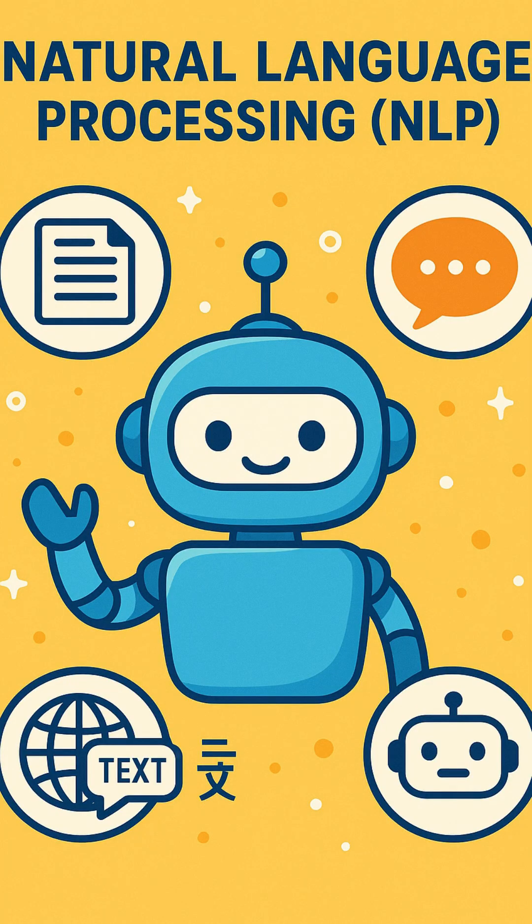What is NLP? First, let's talk about natural language processing. NLP is the umbrella term for all the technologies and methods that help machines work with human language. It includes everything from analyzing text, translating languages, summarizing documents, to detecting spam in your emails. Think of NLP as the entire toolbox that makes language-based AI possible.